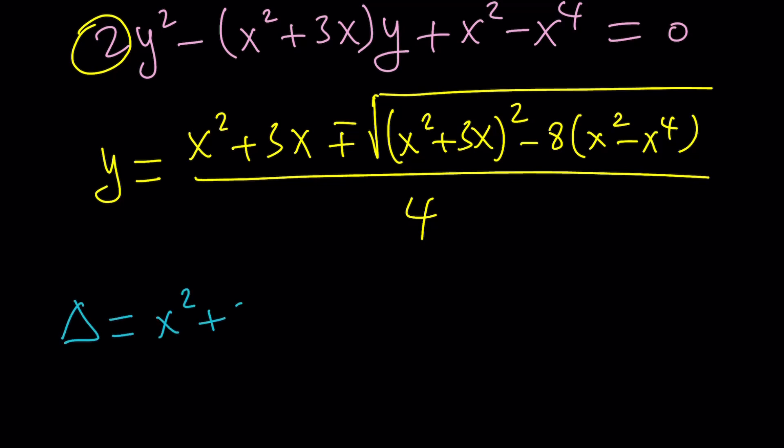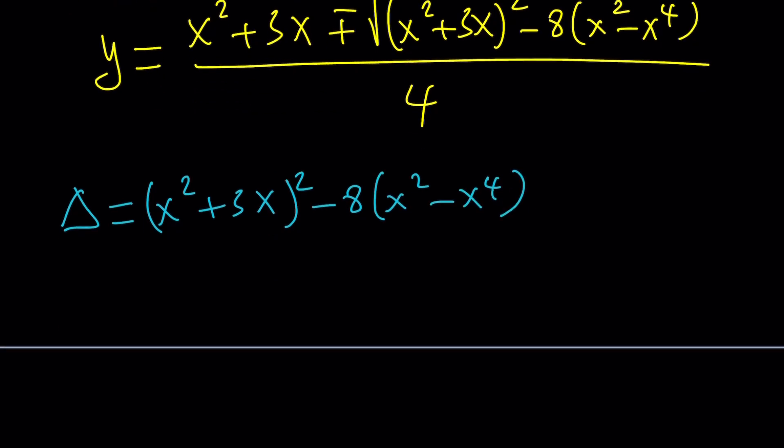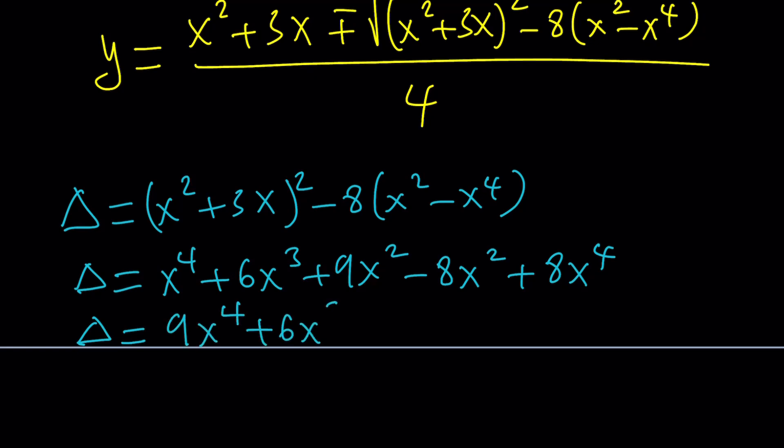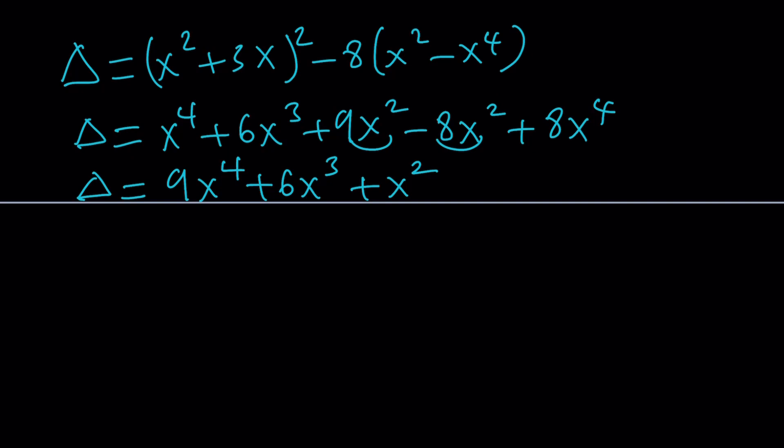So, delta is x squared plus 3x squared minus 8 times x squared minus x to the fourth power. We can definitely factor something out. Well, let's go ahead and expand it first. This will become x to the fourth plus 6x cubed, because I need to do 2ab, plus 9x squared minus 8x squared plus 8x to the fourth power. I'm hoping to get something like a perfect square from here. x to the fourth plus 8x to the fourth is 9x to the fourth. That's good news. And then we have the 6x cubed, and then we have the x squared. Well, does it look like a perfect square to you?